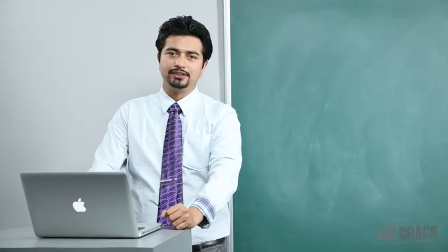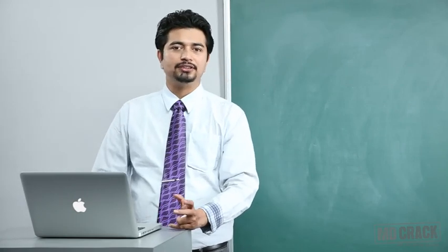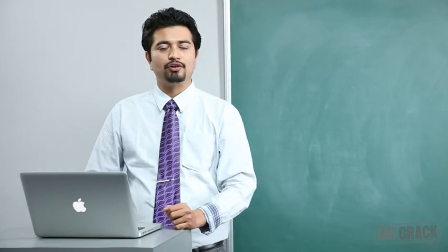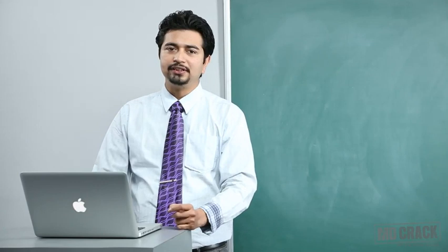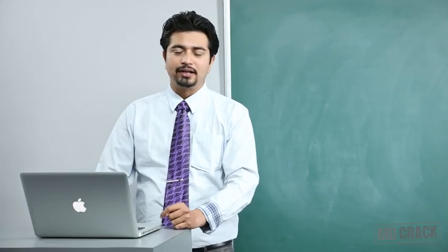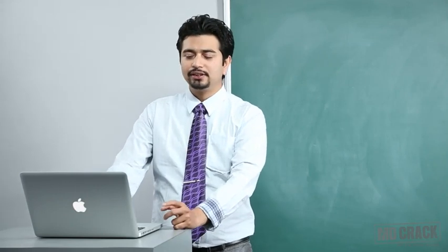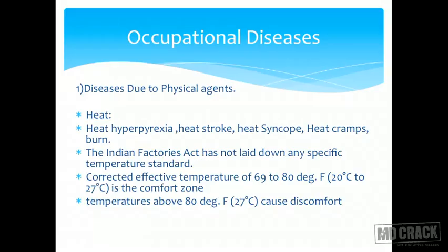Occupational diseases are due to various reasons: diseases due to physical agents, chemical agents, and many others. There is a big list, but we will be seeing the important diseases and their characteristics. First on the list is diseases due to physical agents.